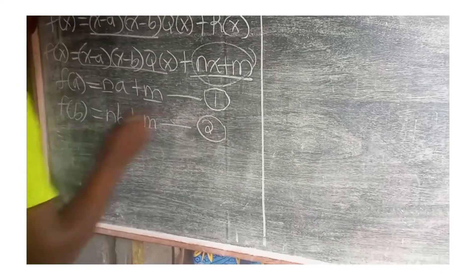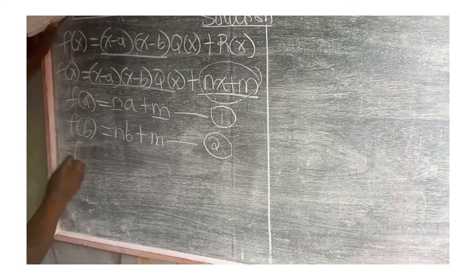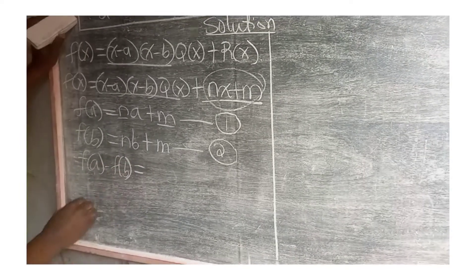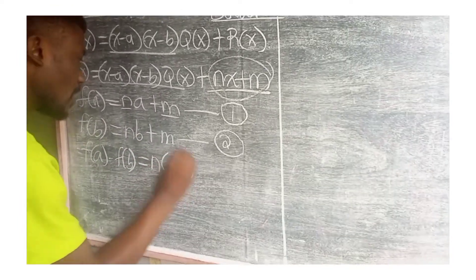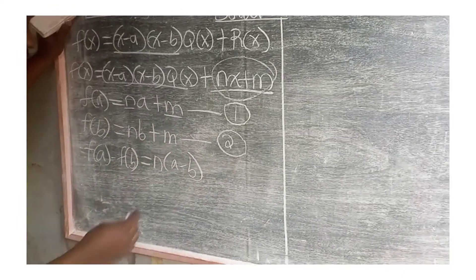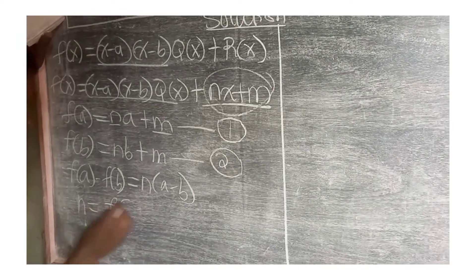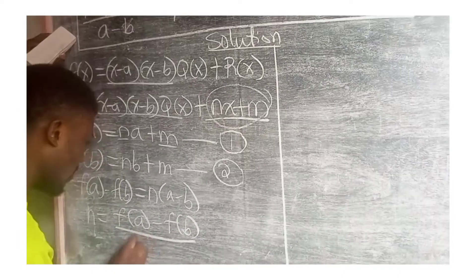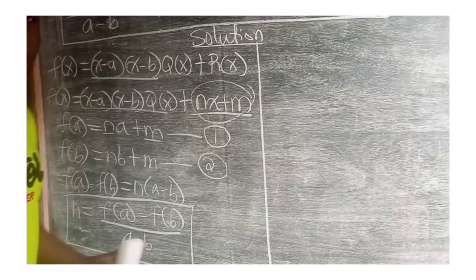So, for this is how we do it, equation 1 minus equation 2. We are going to have f(a) - f(b) equal to n(a-b). This minus this, it vanishes. We make n the subject, and so we have n is equal to [f(a) - f(b)]/(a-b). You see that we have already found our n.